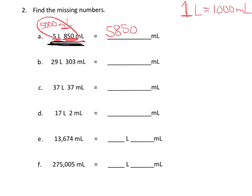So let's skip all the way down to D. We have 17 liters — well, each liter is a thousand milliliters — so this means we have seventeen thousand milliliters...